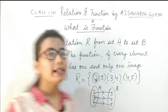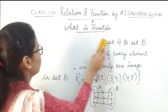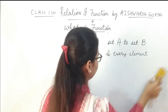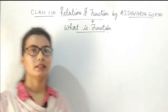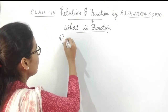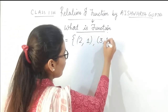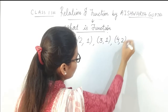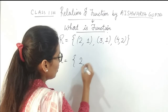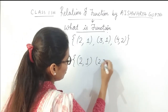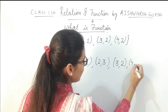Now to get more clarity on understanding functions, let's take more examples. Consider two relations: first, {(2,1), (3,1), (4,2)}, and second, {(2,1), (2,3), (3,2), (4,2), (1,?)}.